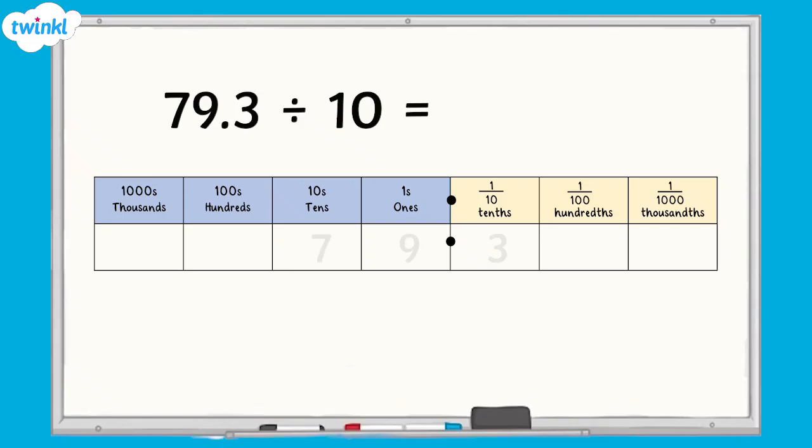When we divide a number by 10, we move each digit one place value column to the right. To divide 79.3 by 10, we move each digit one place value column to the right. The 7 moves from the tens to the ones, the 9 moves from the ones to the tenths, and the 3 moves from the tenths to the hundredths. So 79.3 divided by 10 is 7.93.